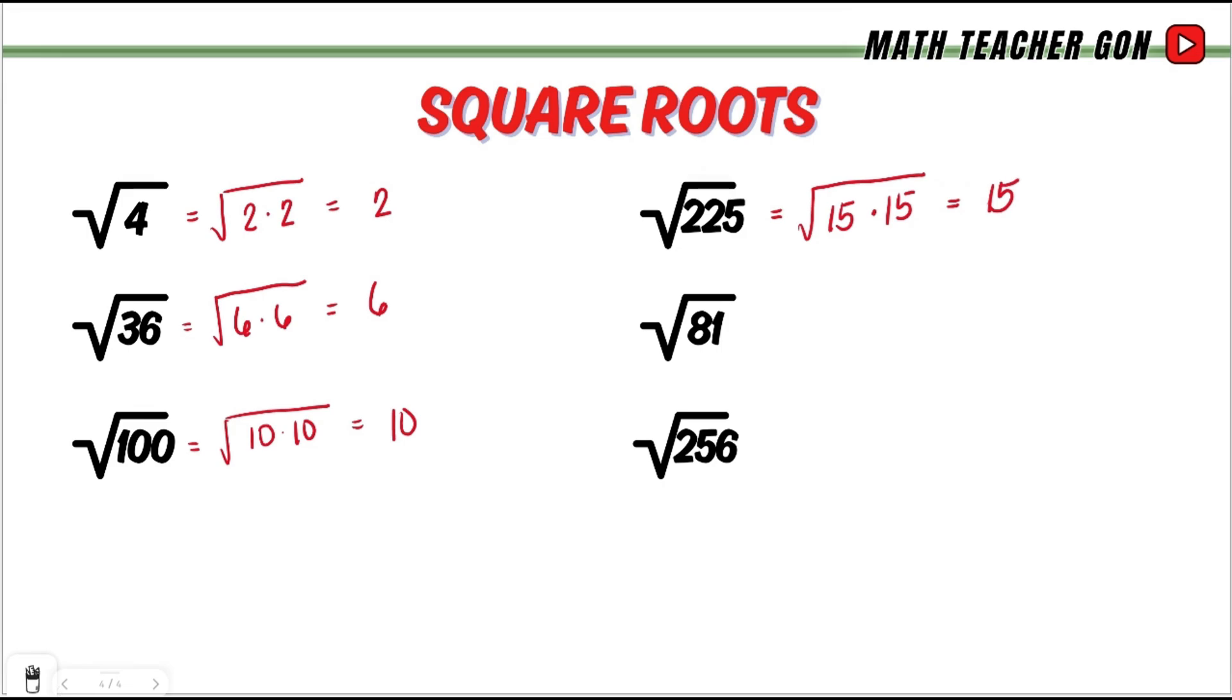How about 81? Let's think of a number. When you multiply by itself, the result is 81. That is 9 times 9. And that is 9.